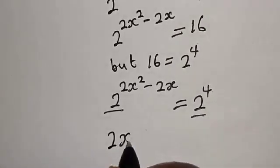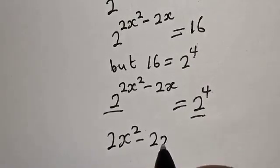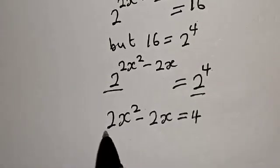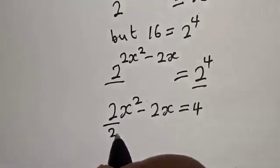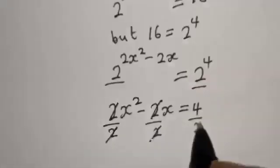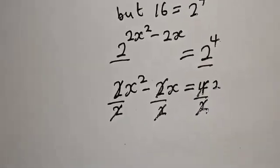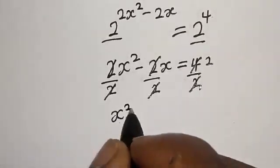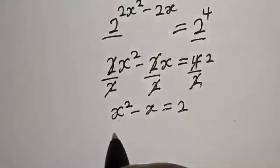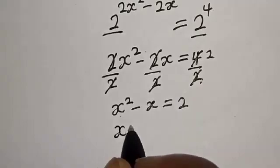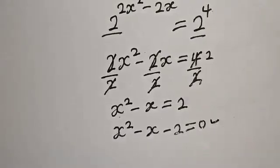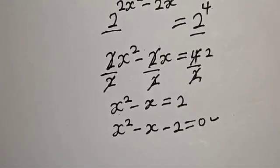Since the bases are the same, we equate the exponents: 2s squared minus 2s equals 4. Dividing all terms by 2 gives s squared minus s equals 2. Bringing 2 to the left side, we get s squared minus s minus 2 equals 0. This is a quadratic equation.